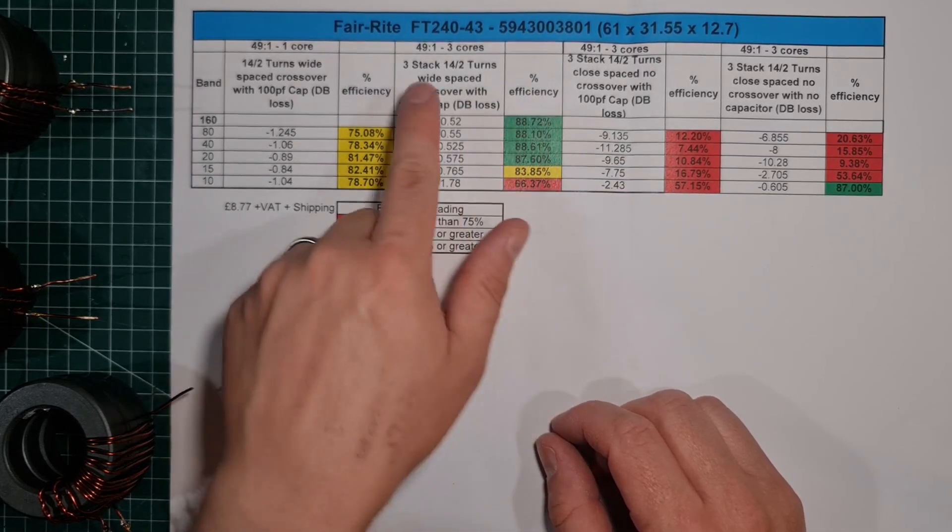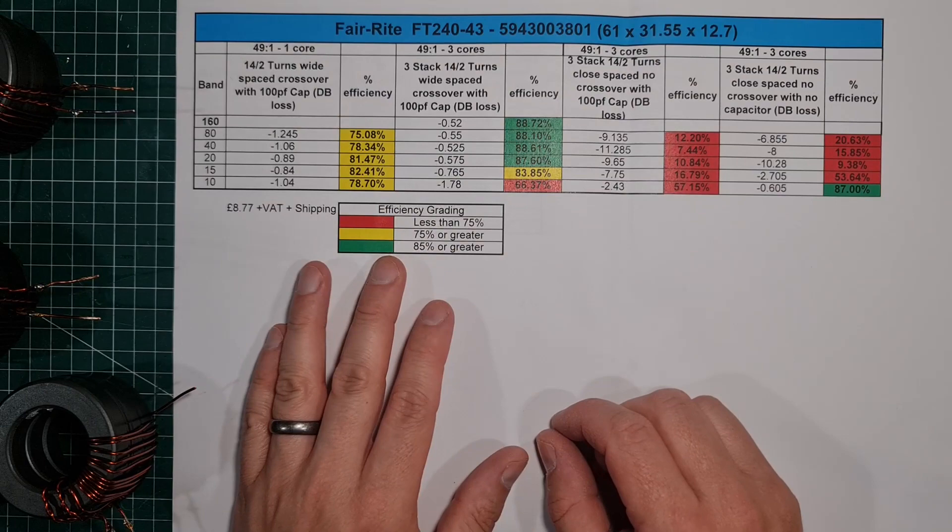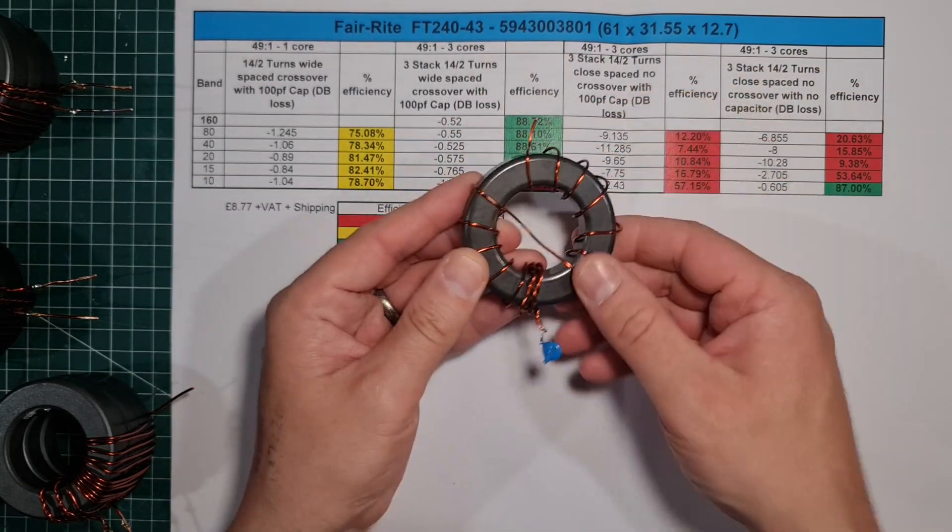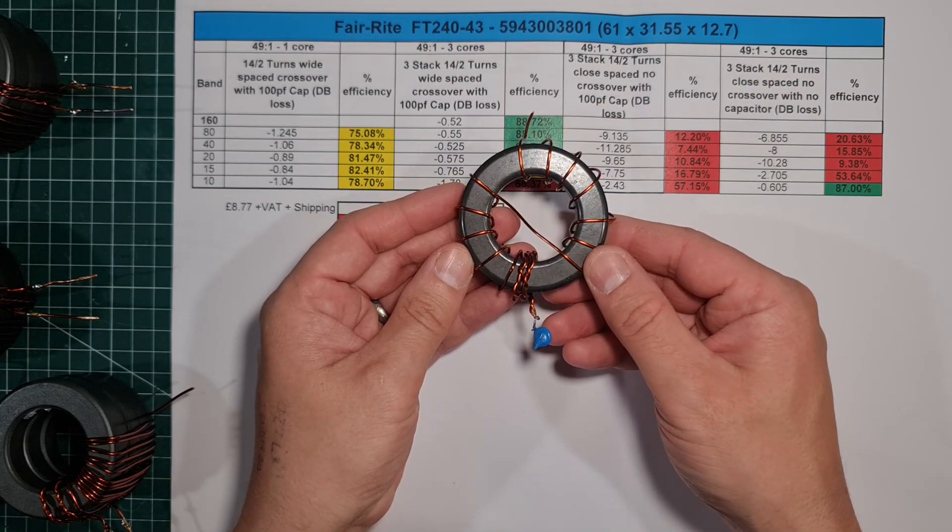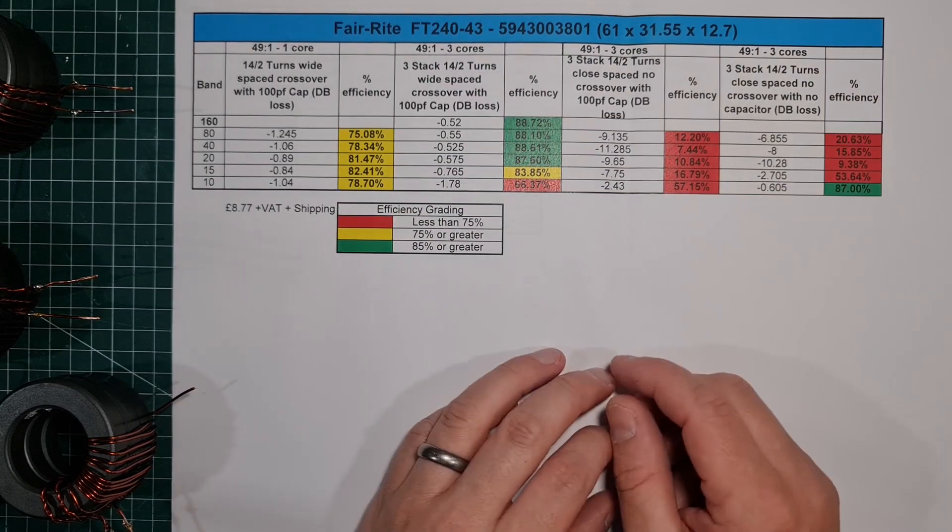A three-stack, a 49-to-1, just your standard winding. I don't have one here, but you can imagine that this was a three-stack. This would be the winding that you would actually want to use in order to get this, although you would have a three-stack.